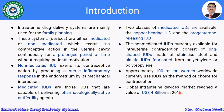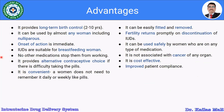Intrauterine drug delivery systems are either medicated or non-medicated, exerting contraceptive action in the uterine cavity continuously for a prolonged period without requiring patient motivation. Moving to the advantages: IUDs provide long-term birth control from 2 to 10 years.